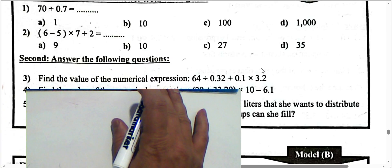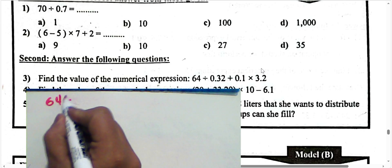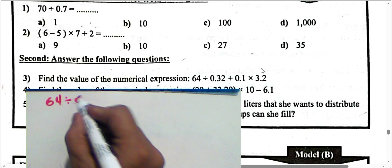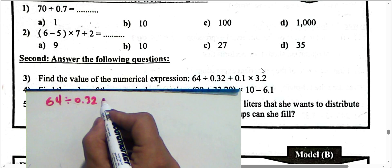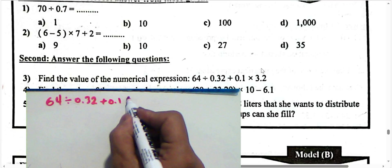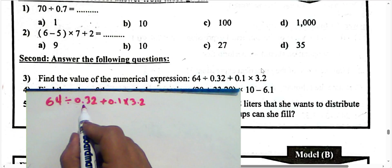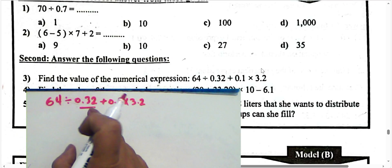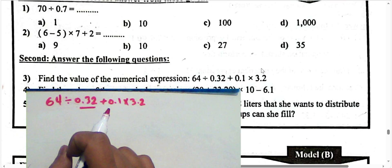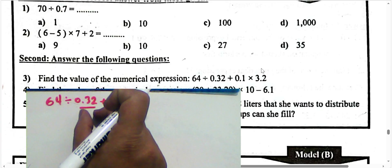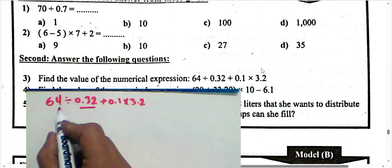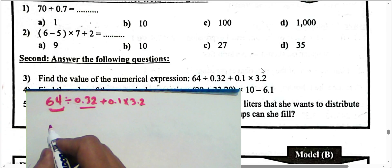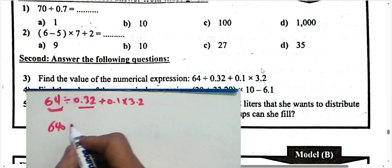Next question: 64 divided by 0.32 hundredths, plus (1/10) times 3.2. First step — we must convert the divisor from 0.32 hundredths to 32 by multiplying by 100. You must cancel the decimal point in the divisor by multiplying by 100, and then also multiply the dividend by 100.